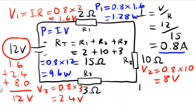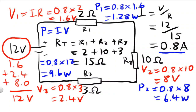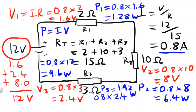For the second resistor, P2 will equal 0.8 times the voltage drop of 8, which will equal 9.6 watts. And for P3, P3 will equal 0.8 times the voltage drop of 2.4, which will equal 1.92 watts. So adding all of those up — 6.4 plus 1.28 plus 1.92 — we should get 9.6 watts.